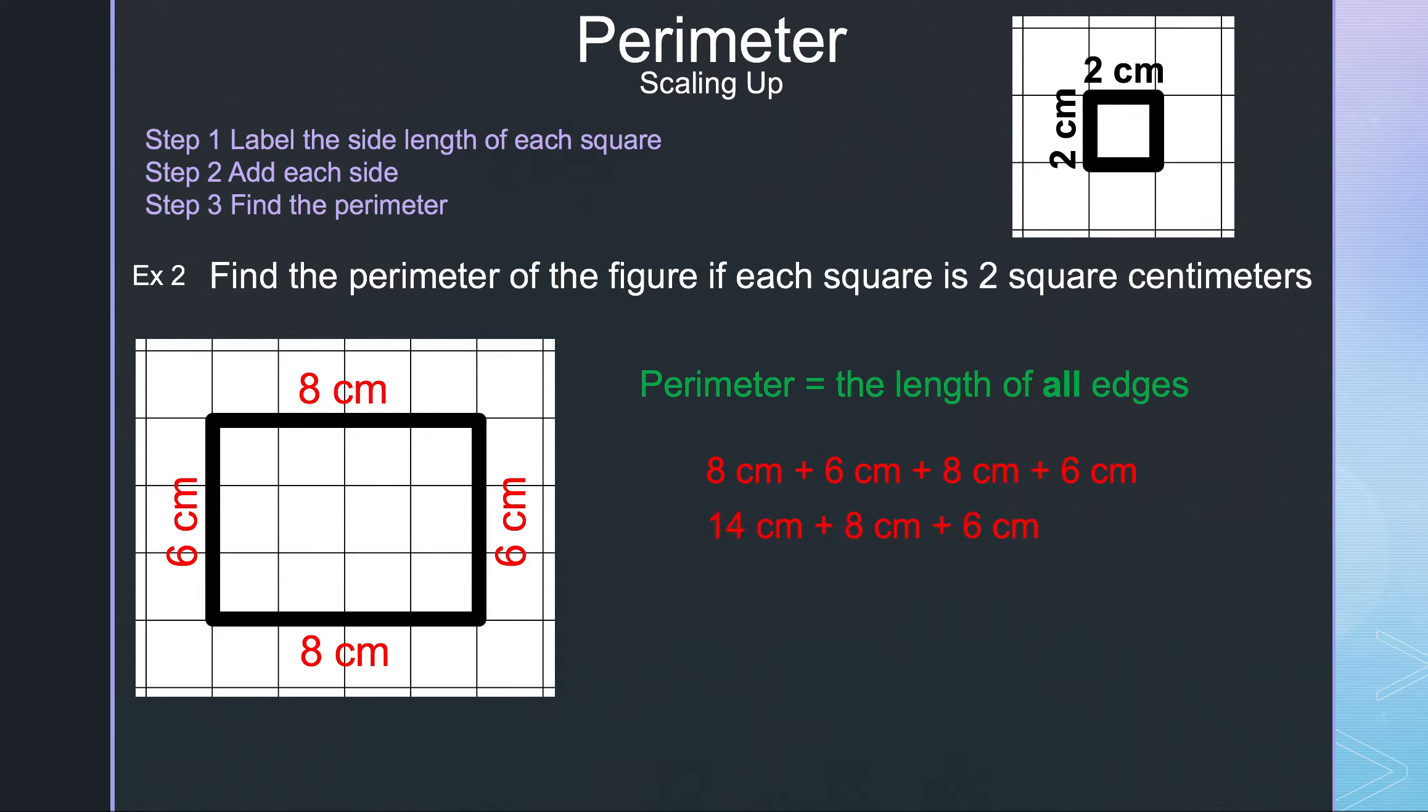8 plus 6 is 14, 14 plus 8 is 22, and 22 plus 6 is 28. So the perimeter of this figure is 28 centimeters.